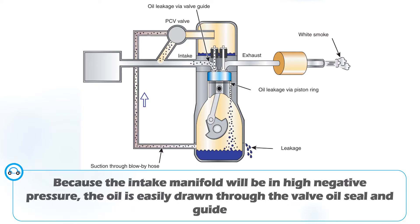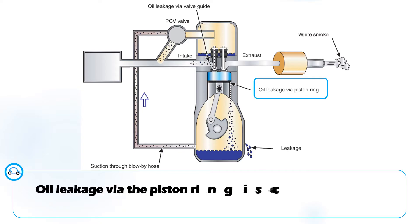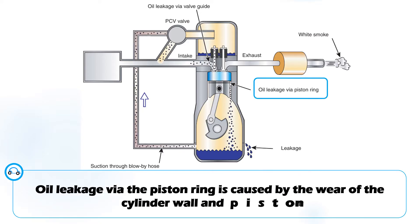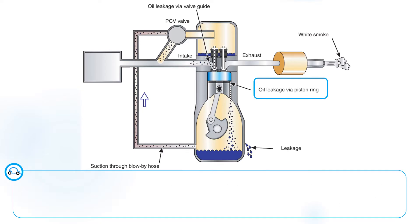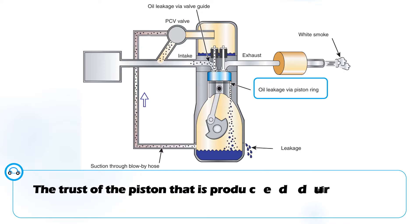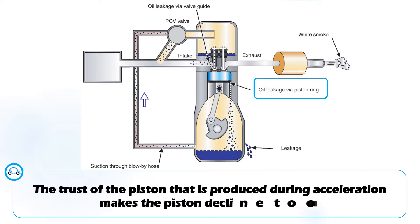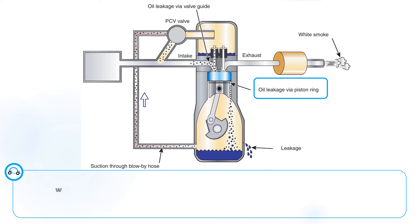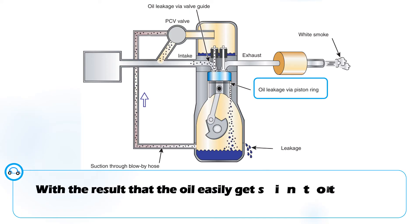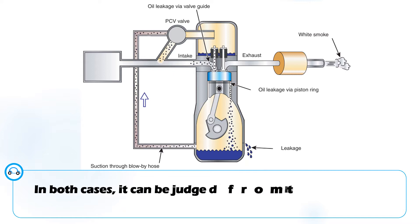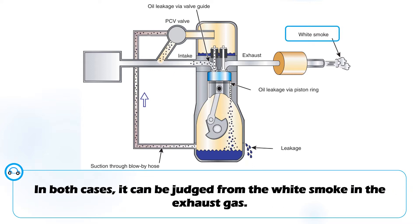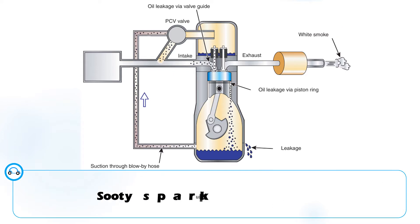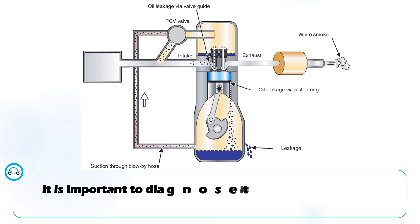Oil leakage via the piston rings is caused by the wear of the cylinder wall and piston rings. The thrust of the piston produced during acceleration makes the piston decline to one side, with the result that oil easily gets into the combustion chamber. In both cases it can be judged from the white smoke in the exhaust gas. Sooty spark plugs also indicate a cause. It is important to diagnose the malfunction from the various symptoms seen while the vehicle is operating.